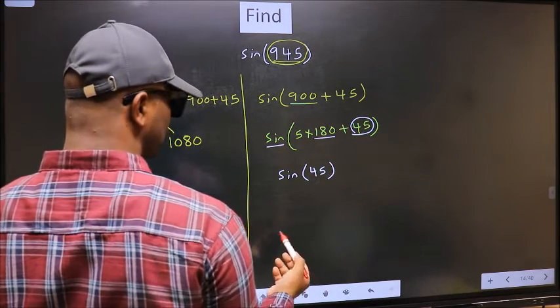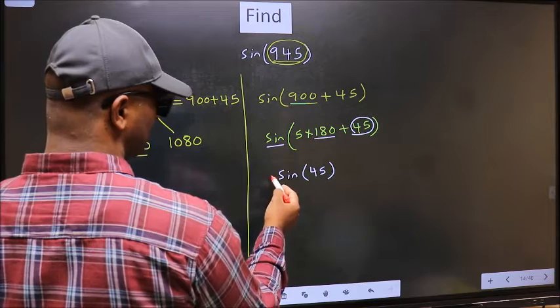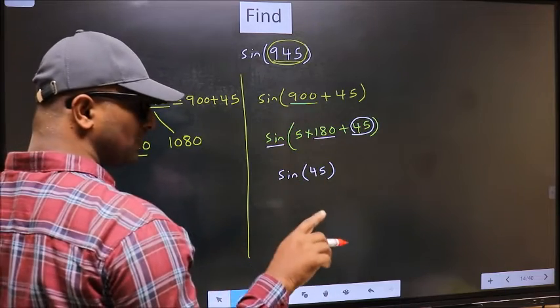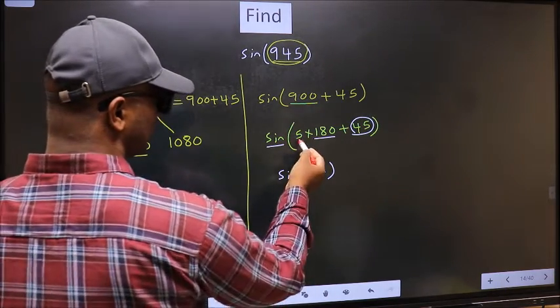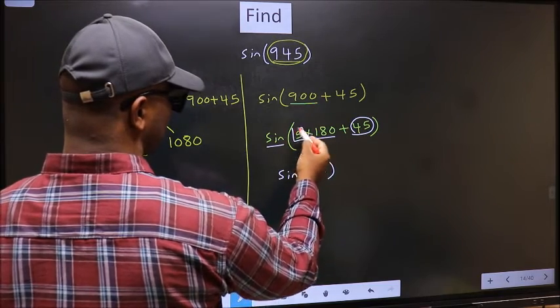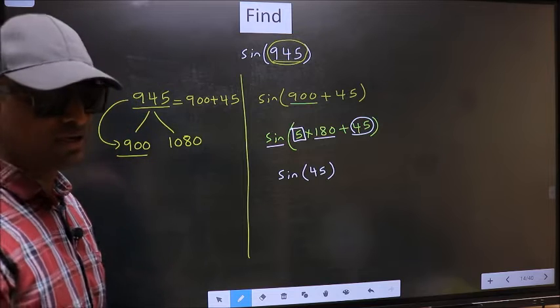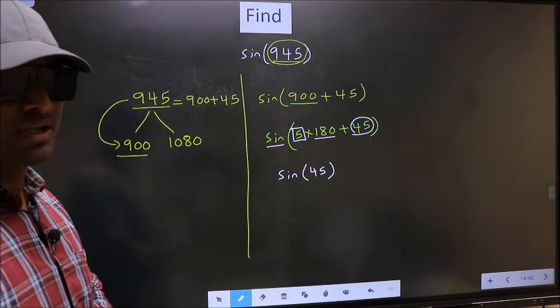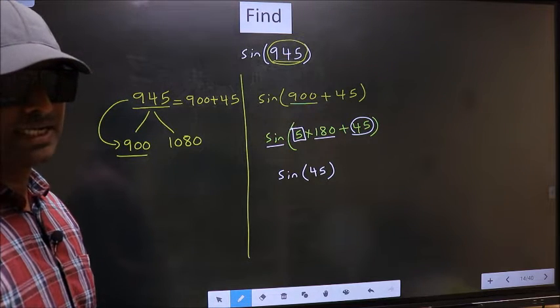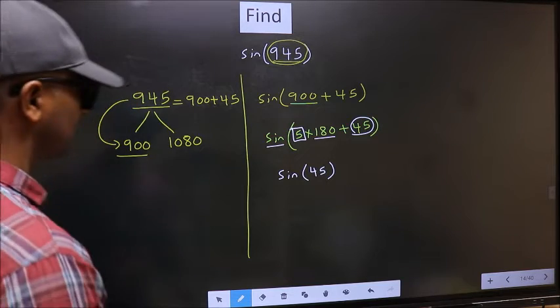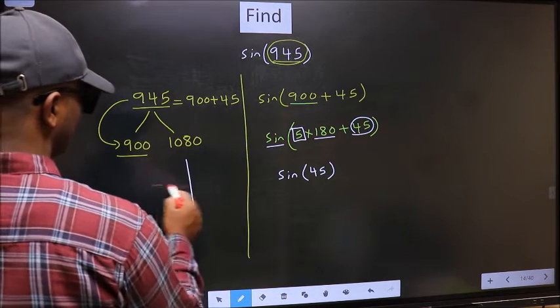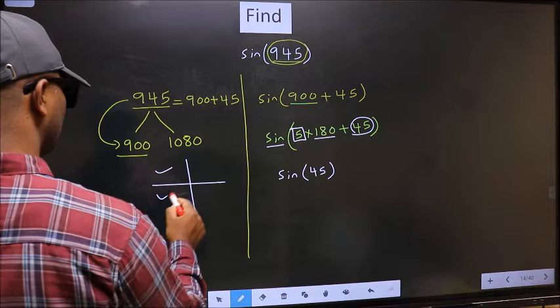Now the question is, will we get here plus or minus? To answer that, we should look at the number before 180. That is 5, and 5 is odd. And all the odd multiples of 180 lie in either the second or the third quadrant.